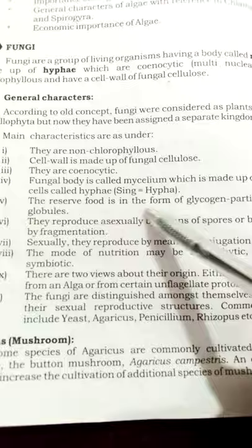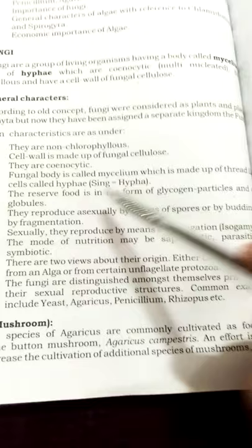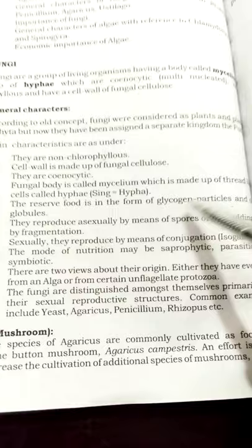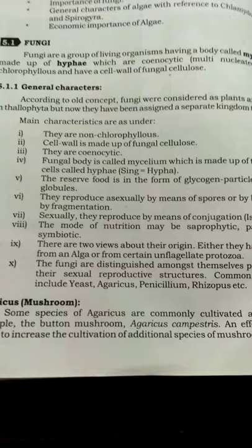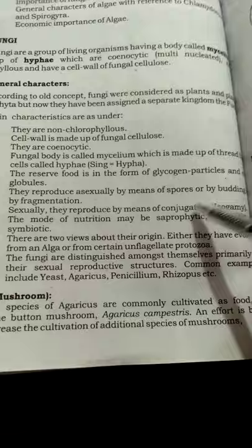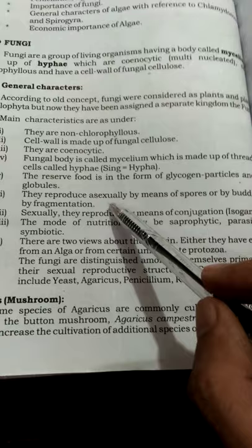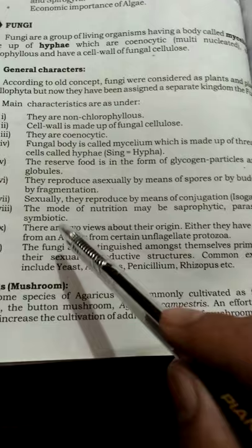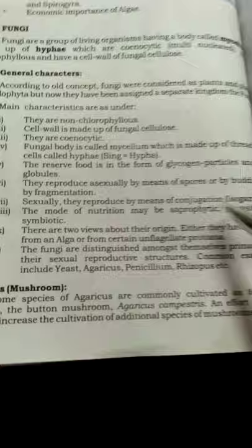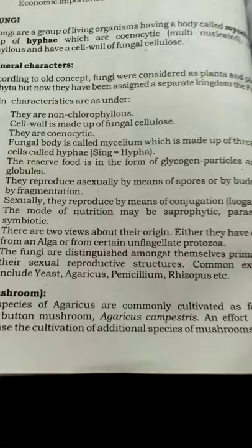The reserve food in fungi is in the form of glycogen particles and oil globules. Glycogen is a stored form of glucose. Oil globules are also present as reserve food. Fungi reproduce asexually by means of spores, by budding, or by fragmentation — three types of asexual reproduction. Sexually, they reproduce by means of conjugation, also called isogamy, which requires two parent organisms.